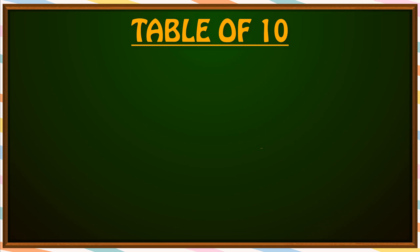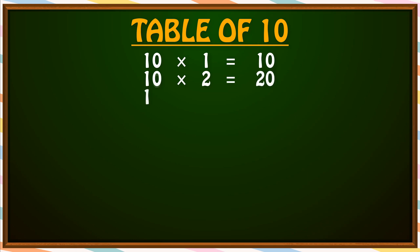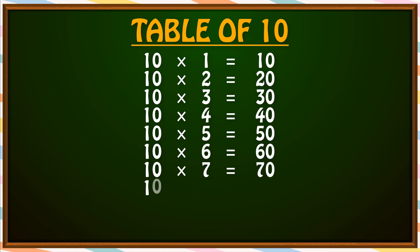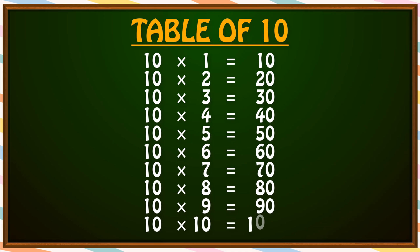Just revise. 10 times 1 is 10. 10 times 2 is 20. 10 times 3 is 30. 10 times 4 is 40. 10 times 5 is 50. 10 times 6 is 60. 10 times 7 is 70. 10 times 8 is 80. 10 times 9 is 90. 10 times 10 is 100.